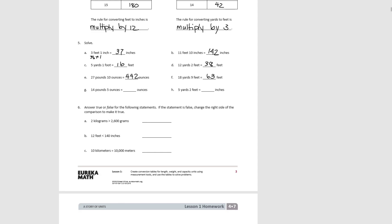For G, pounds to ounces: 14 times 16 plus 5 equals 229 ounces. For H, we're going from yards to inches — careful here. There are 36 inches in a yard, plus 2 feet which is 24 more inches, giving 204 inches total.